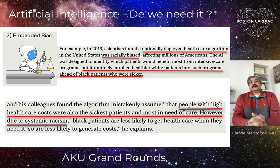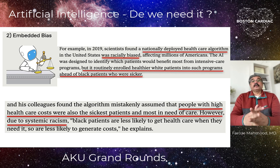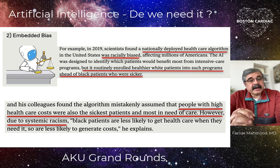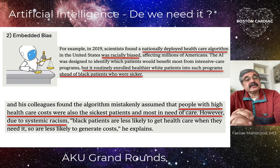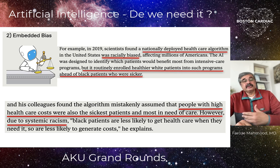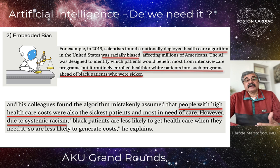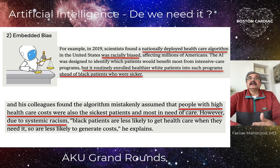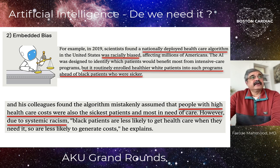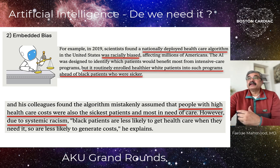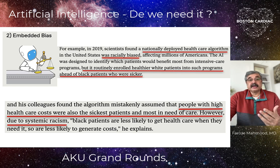The second failure mode is embedded bias. In 2019, scientists found that a nationally deployed US healthcare algorithm was racially biased. It was designed to identify patients who would benefit most from intensive care programs, but it routinely enrolled healthier white patients over sicker black patients — because it assumed black patients had lower healthcare costs and would die sooner. Despite the potential of AI to democratize healthcare, there are significant risks of bias, and since people assume machines have no bias, the actual bias can be even worse.